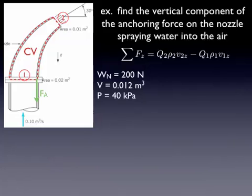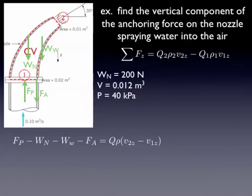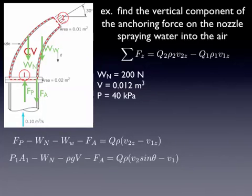Let's look at our external forces. We've got our anchoring force, which we're solving for, and I'm going to arbitrarily draw it down — I could draw it either way. We've got the weight of the nozzle itself. We've also got to consider the weight of the water inside the nozzle, and then there's pressure within that pipe, so there's a pressure force pushing upward on the control volume. We can put those together in the equation. Be careful of the signs — you have to be really careful of your sign convention when you use conservation of momentum. The pressure force is upward, and the other three are all downward, so the other three are negative. Notice that I've factored out Q, using conservation of mass — flow rate in has to equal the flow rate out, so Q1 has to equal Q2. It's all water, so I've factored out the density as well. And then we've got the vertical components of the velocity.